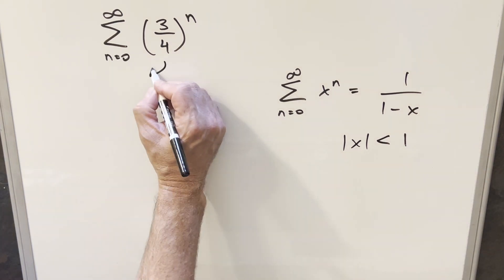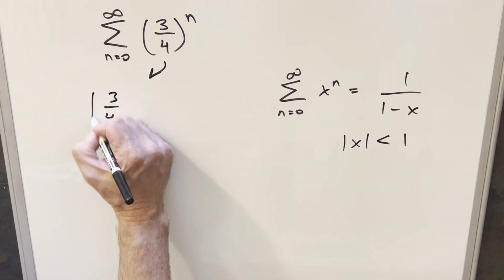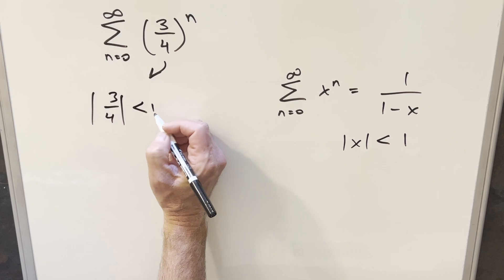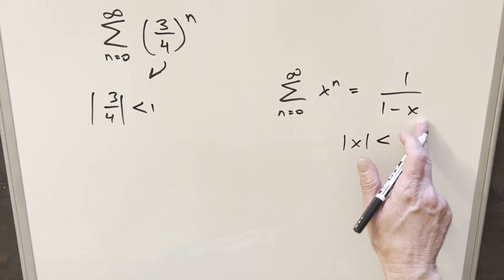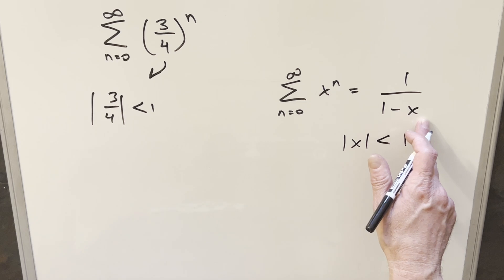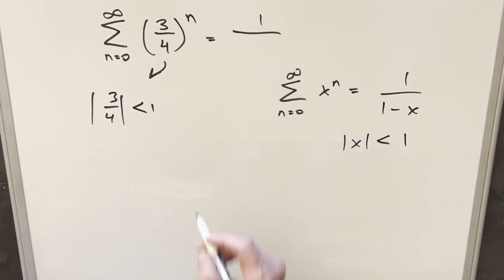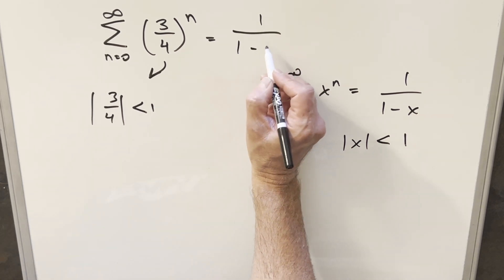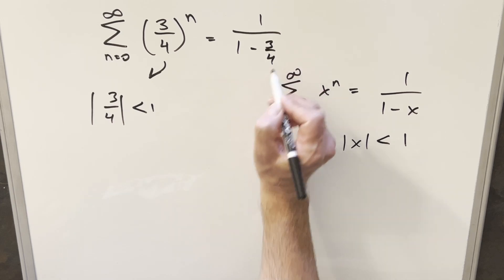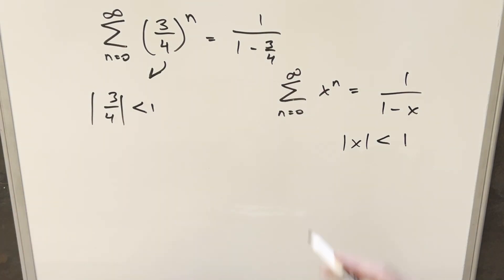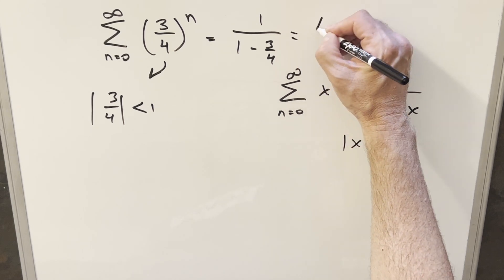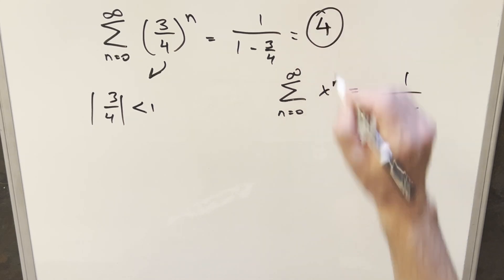Well here, we notice three-fourths or absolute value of three-fourths is clearly less than 1, so this is clearly going to converge. We can use our geometric series formula. In this case we can find our exact value, whereas a lot of times it's very hard to find the exact value for a series. Working this out, 1 minus 3-fourths is just 1-fourths. Flip it, and we have our answer. This is just going to be 4.